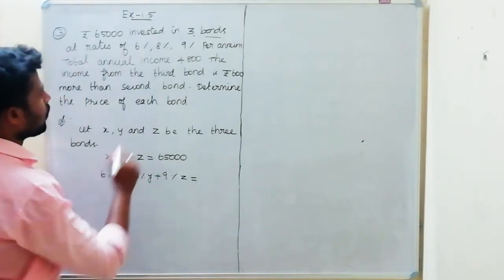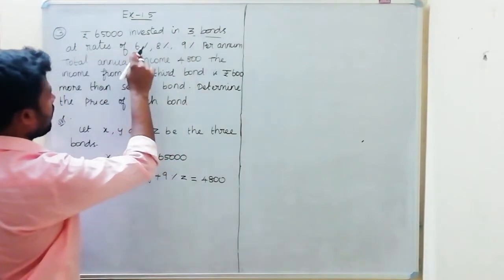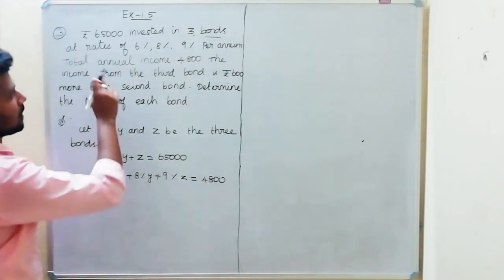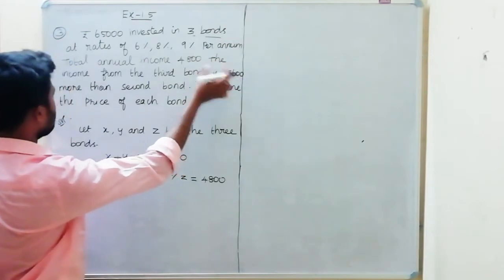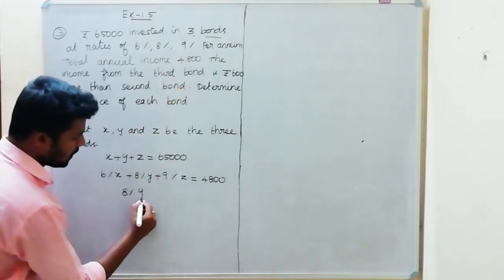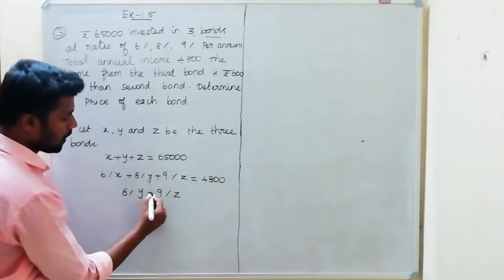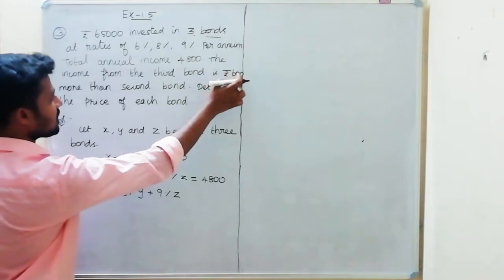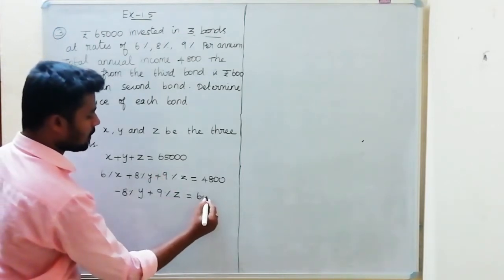Second equation: total annual income is 4,800. So 6% of x, 8% of y, 9% of z equals 4,800. Third equation: income from the third bond is 600 more than the second bond. Third bond is 9% z, second bond is 8% y.